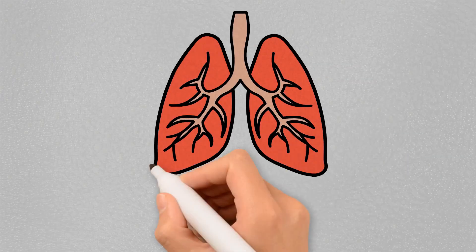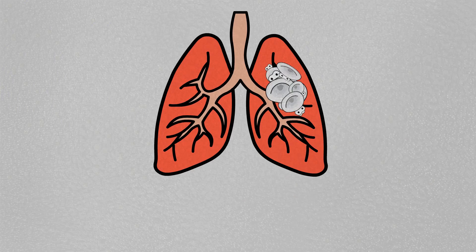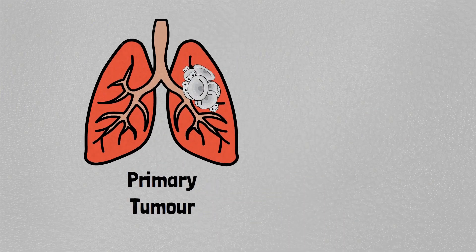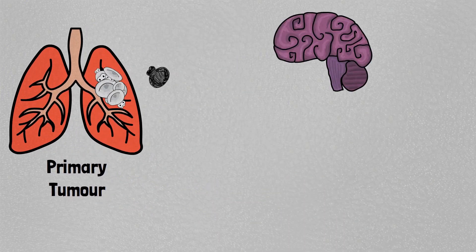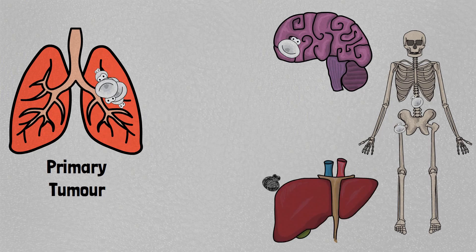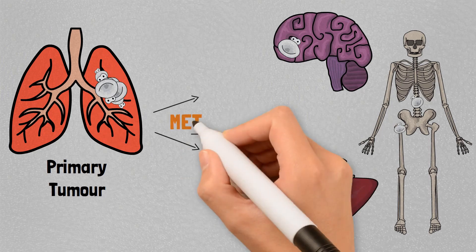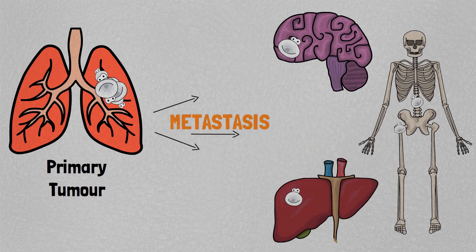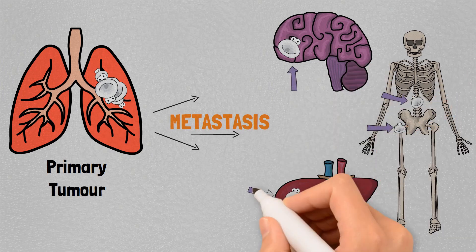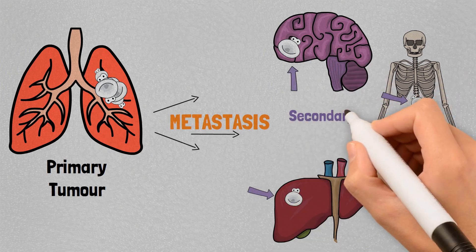Cancer develops in one organ of the body and here it is called the primary tumour. When cancer cells spread distantly from this organ, the process is called metastasis. Cancer tumours at these distant sites are called secondary tumours.